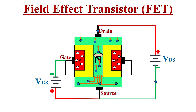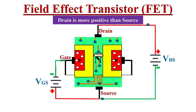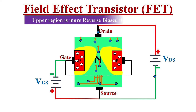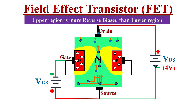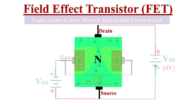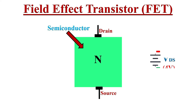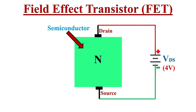Practically the depletion region at the junction doesn't look the same along the entire junction. The drain voltage is more positive than source voltage, so the depletion region is wider at the top of the P-type region because the upper region is more positive than the lower region. The N-channel is a semiconductor — when we apply a voltage across this channel, it acts as a resistor.